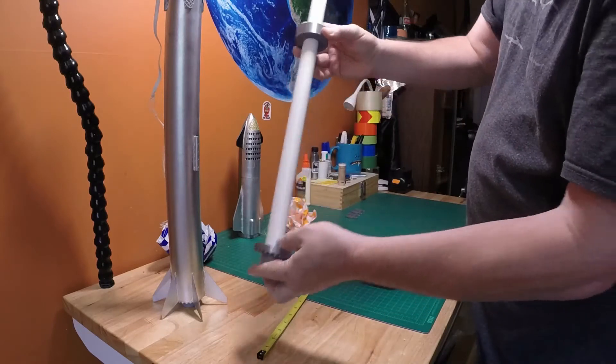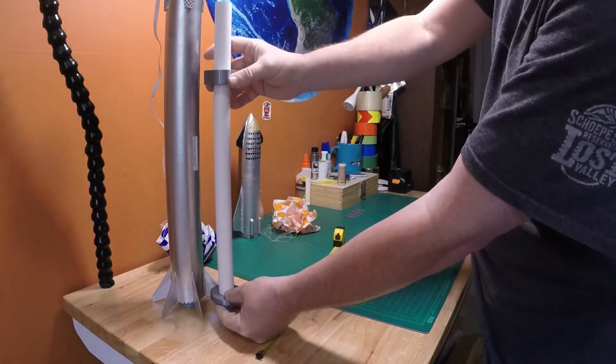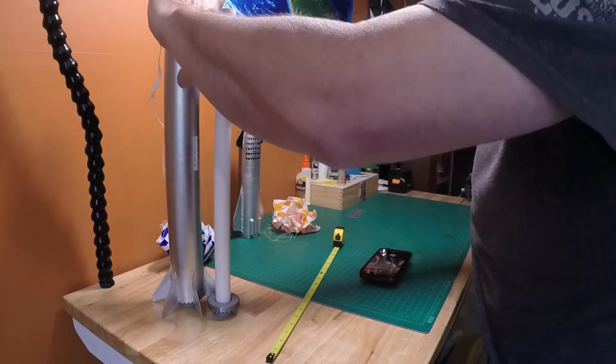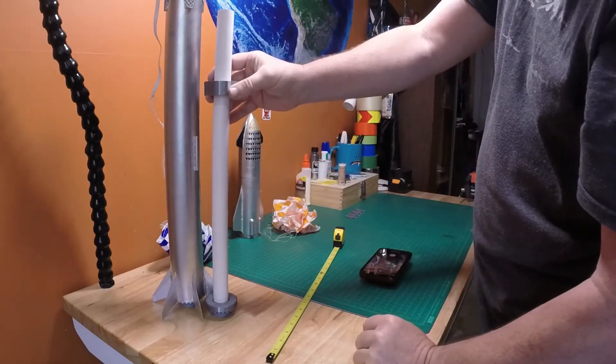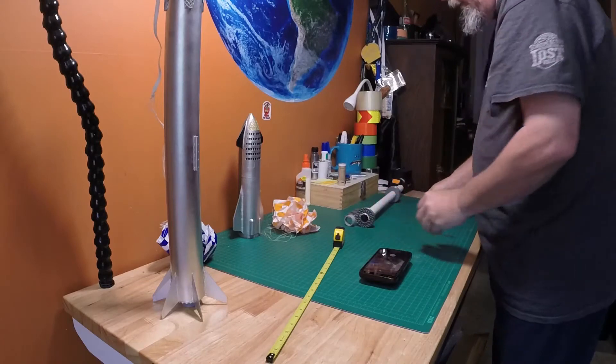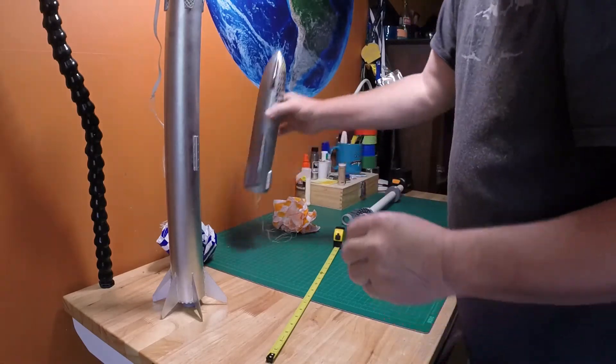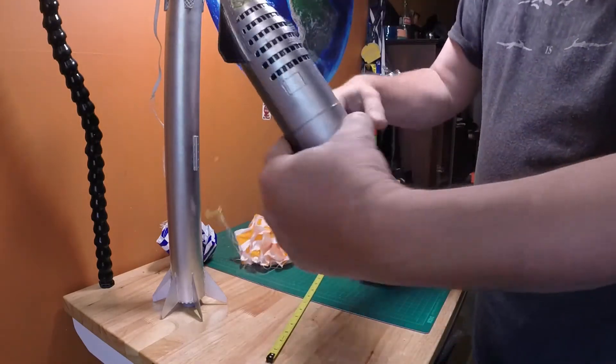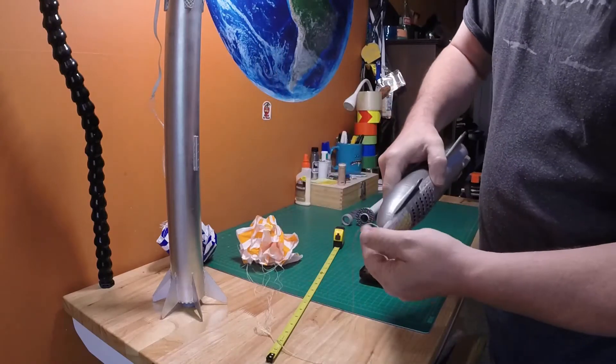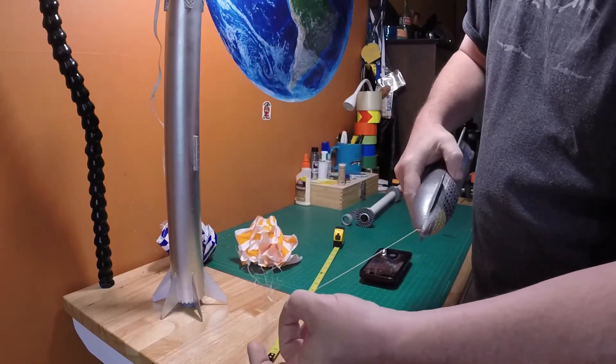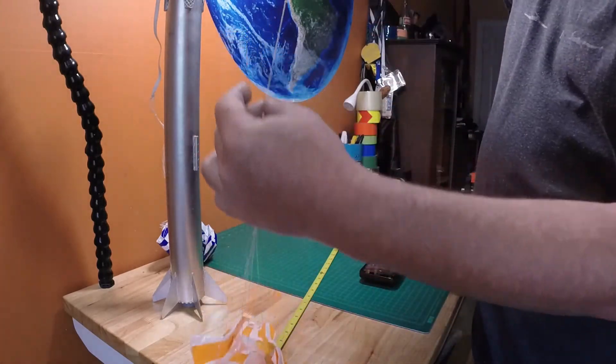Then that sits inside the rocket, and you can see that it gives you about that much space. In my case, I've got it set up for two parachutes. You'll notice that the actual top of the Starship has a Kevlar line that's actually glued into the top of it.